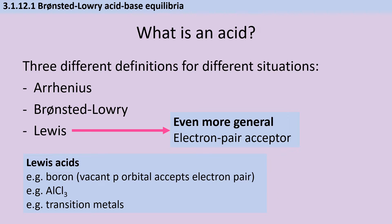The Lewis definition for an acid doesn't actually appear until the transition metal topic, but it's even more general than Brønsted-Lowry: an acid is an electron pair acceptor. This even applies to chemicals that don't interact with hydrogen ions at all — for instance, boron when it makes halides, or aluminium chloride which is electron deficient and able to take on a fourth chloride ion, or transition metals when they form complex ions.